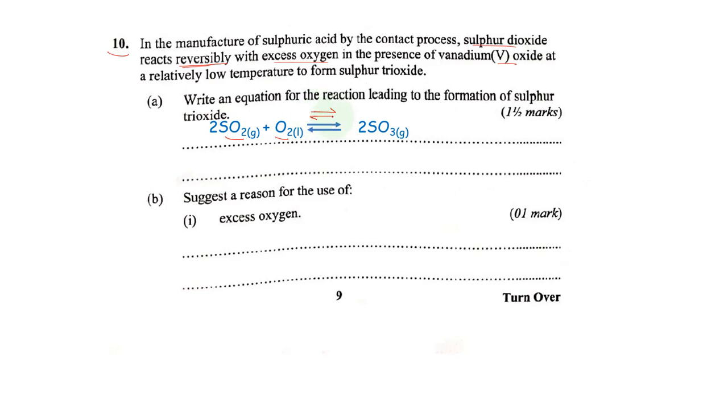We have to use these two two-way arrows. In the presence of vanadium 5 oxide at relatively low temperature to form our sulfur trioxide, and then we have to balance our equation with the twos.